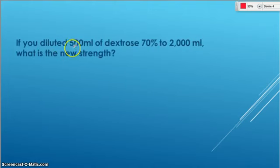Here's an example. We are diluting 500 mils of a 70 percent to 2,000 mils. And we want to know what's the new strength. So what are we going to make? So that's the piece we're looking for. So we're starting off with the 70 percent.